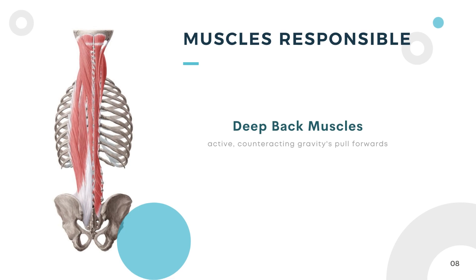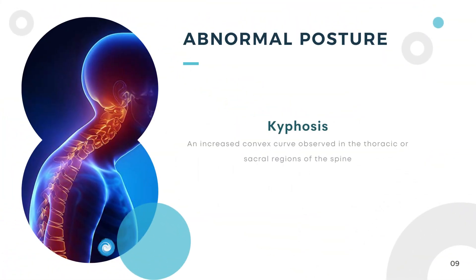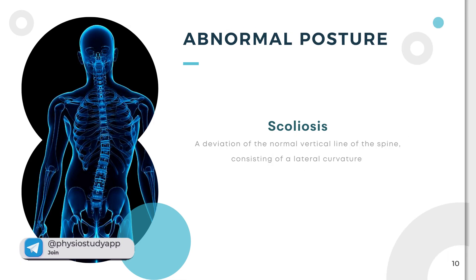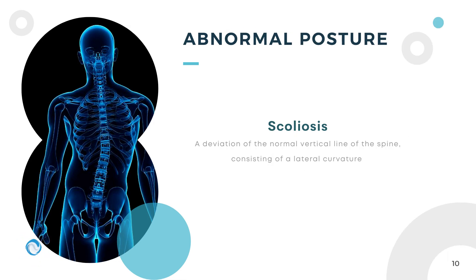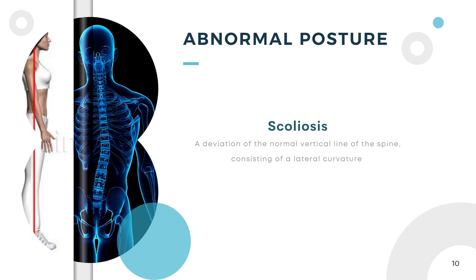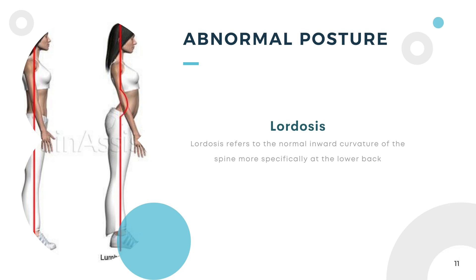While any posture close to ideal is considered normal, there may be deviations from normal values which lead to abnormalities. These include kyphosis, which is increased outward curvature or convexity seen at the thoracic and sacral regions. Scoliosis is a deviation of the normal vertical line of the spine, consisting of a lateral curvature — patients with this condition have a visible hump while bending downwards. Lordosis refers to the normal inward curvature of the spine, more specifically at the lower back, and is quite the opposite of kyphosis.